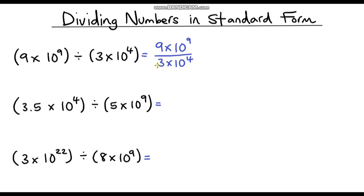Looking at the single digits first: 9 divided by 3 is 3, so we get 3 multiplied by... Now for the powers of 10: 10 to the power 9 divided by 10 to the power 4. Using the laws of indices, when we divide numbers with the same base we subtract the indices. So it's 10 to the power of 9 minus 4, which is 5. Our answer is 3 times 10 to the power 5, written in standard form.